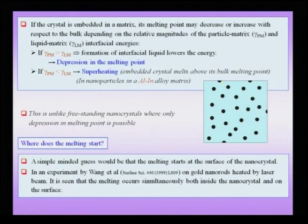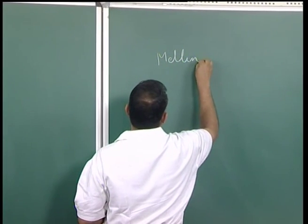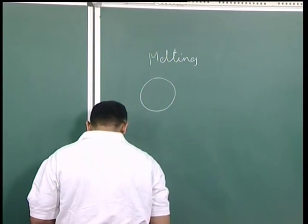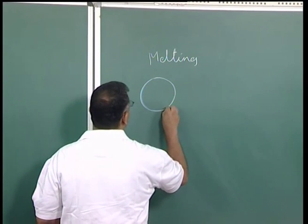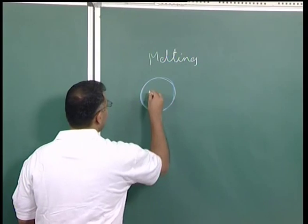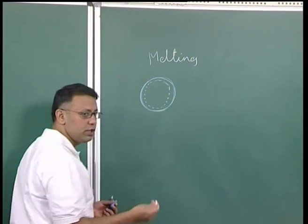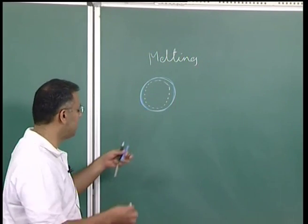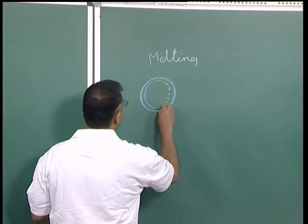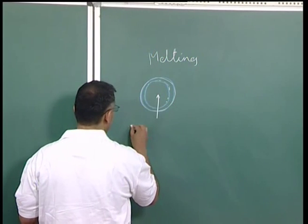The obvious question which arises is whether the surface melts first, and therefore the next layer becomes the surface, then the next layer becomes the surface — meaning there is continuous melting from outward to inward. So there is one possibility: the surface actually melts first, this layer gets molten, the effective surface moves inward, and since the temperature is already above the melting point of that smaller crystal, melting would progress inward. This is scenario one.